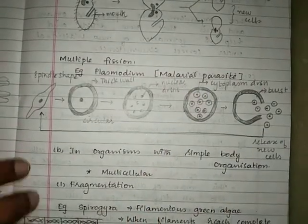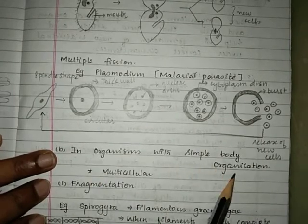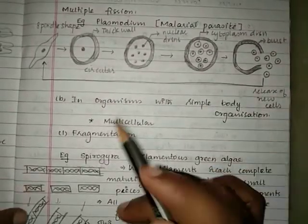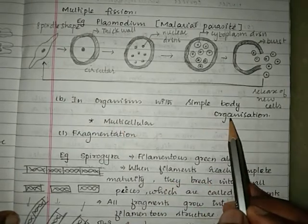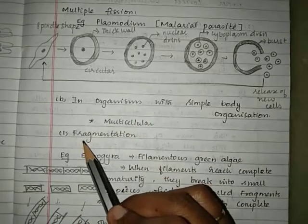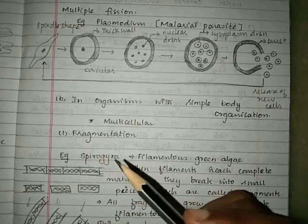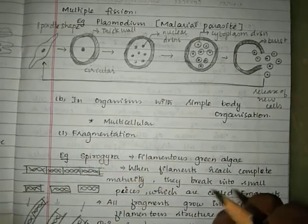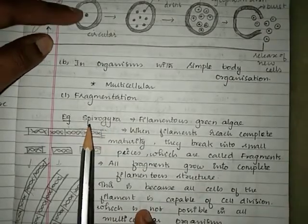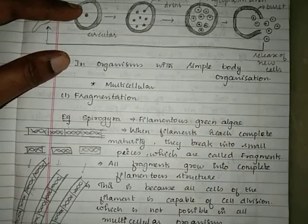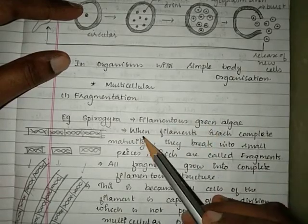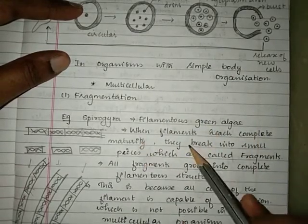The next category is asexual reproduction in organisms with simple body organization. These are multicellular organisms but without tissues, organs, or organ systems. The first method is fragmentation — the organism breaks into many pieces and all pieces develop into complete organisms. An example is Spirogyra, a filamentous green algae present in the form of long threads. When the filaments reach complete maturity, they break into small pieces called fragments.